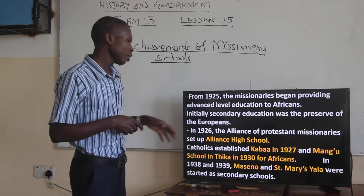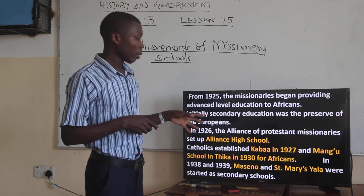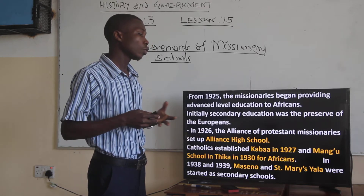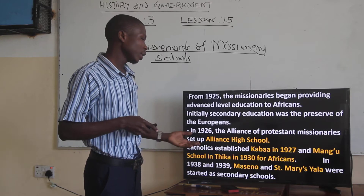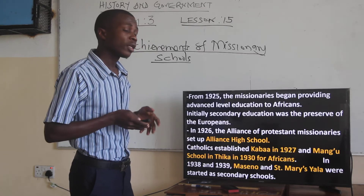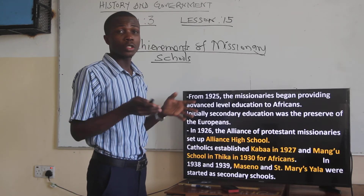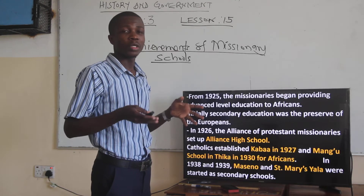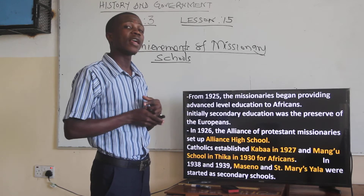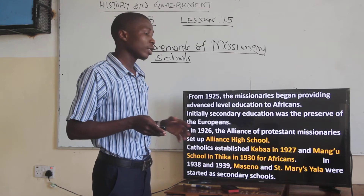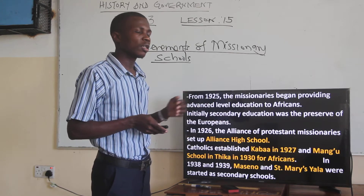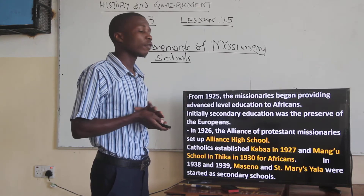In 1938 and 1939, Maseno School and St. Mary's Yala were also started as secondary schools, and Africans were also allowed to attend. If you look at the first renowned Africans who were educated — the great leaders who had knowledge in various fields — you find that they were products of these great schools established early on.